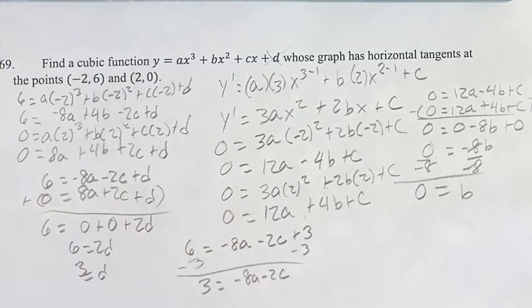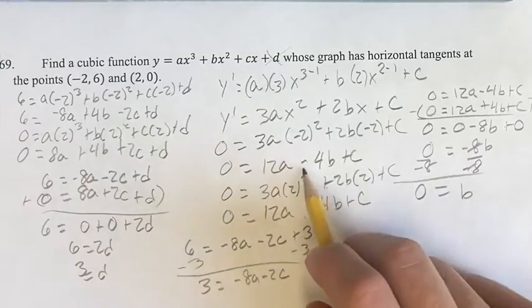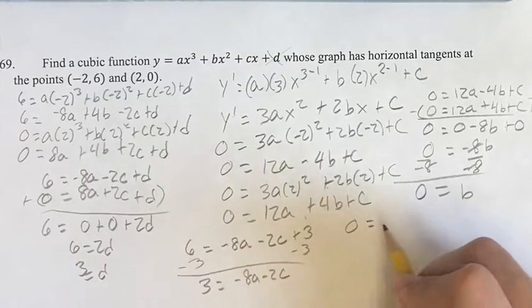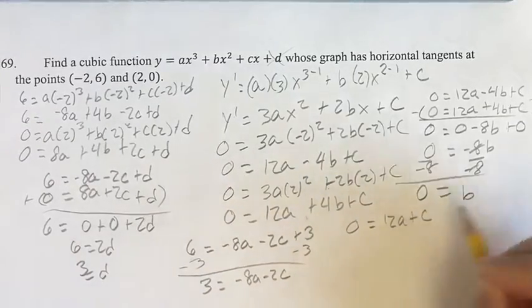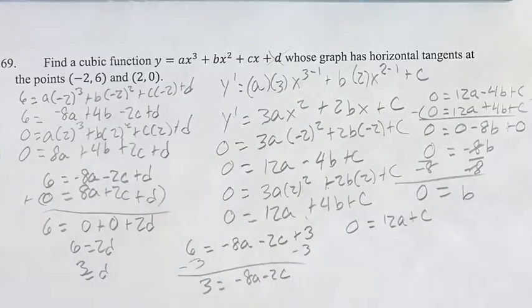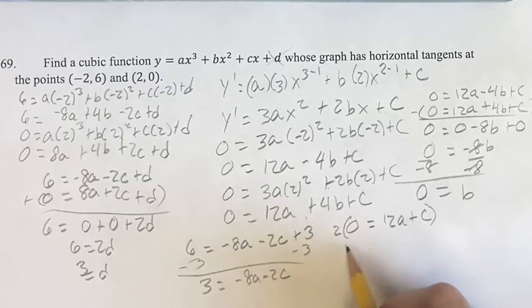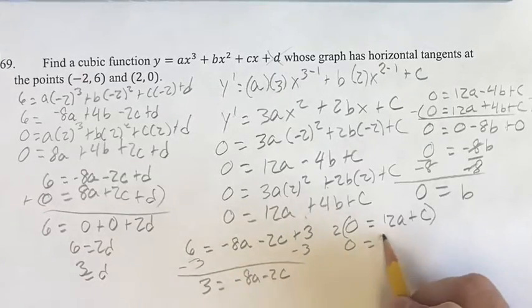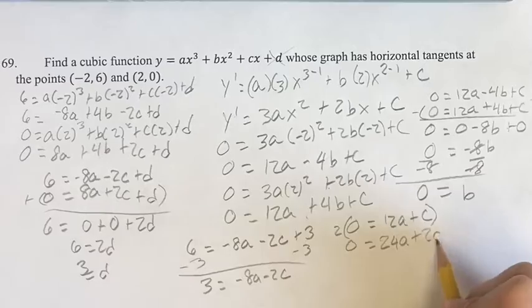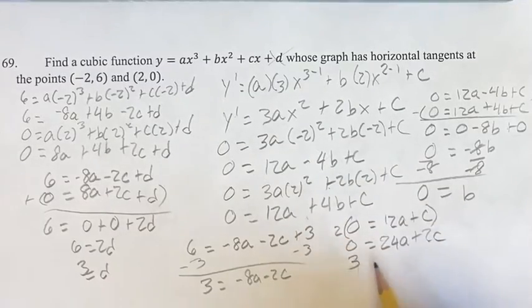Over here, if we take one of these equations, b equals 0, ignore that term, and we get 0 equals 12a plus c. I'm going to get this into the form where we can eliminate it if we bring in this equation. So if we multiply everything in here by 2, we get 0 equals 2 times 12 is 24a plus 2c.